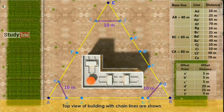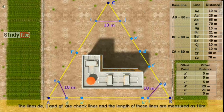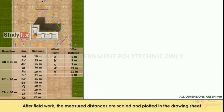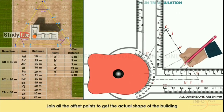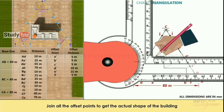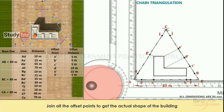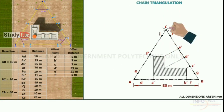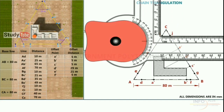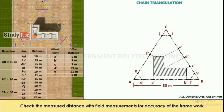A top view of the building with chain lines is shown. The lines DE, IJ, and GF are checked lines and the lengths of these lines are measured as 10m. After fieldwork, the measured distances are scaled and plotted on the drawing sheet. All offset points are joined to get the actual shape of the building. The lengths of the checked lines are measured and compared with field measurements to verify the accuracy of the framework.